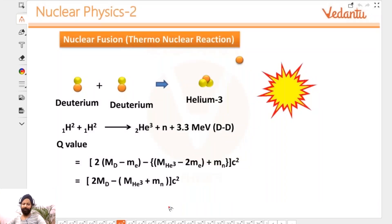Deuterium, which is an isotope of hydrogen having one neutron, and another deuterium combine to give you helium plus a neutron, plus 3.3 mega electron volts of energy. One reaction gives you 3.3 MeV that you can convert into joules if required.